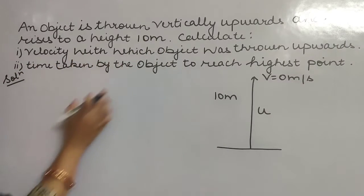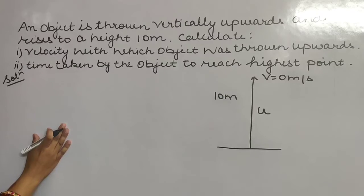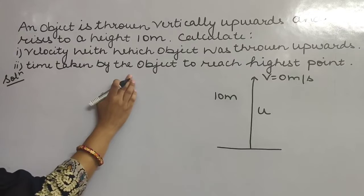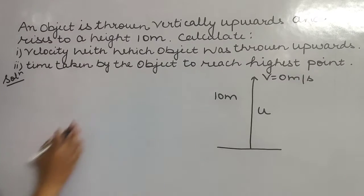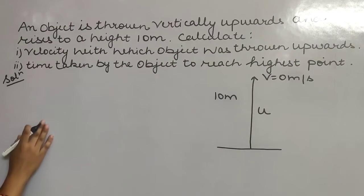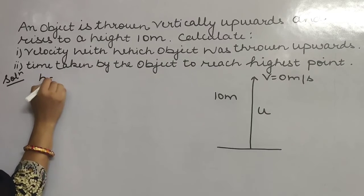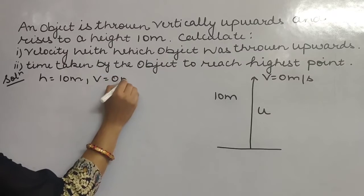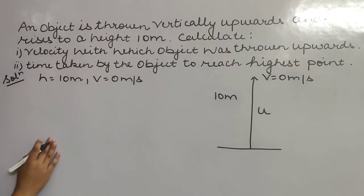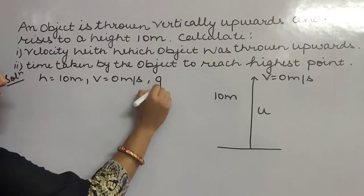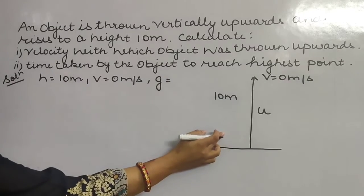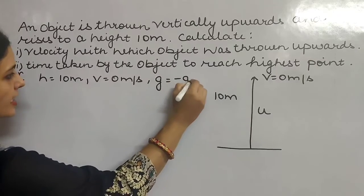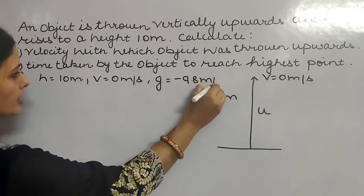Calculate the velocity with which the object was thrown, that means initial velocity you have to find. In the second part, find the time taken by the object to reach the highest point. So what is given in the question: h is 10 meters, final velocity is 0 meters per second, and g is minus 9.8 meter per second squared since we are projecting the object vertically upwards.